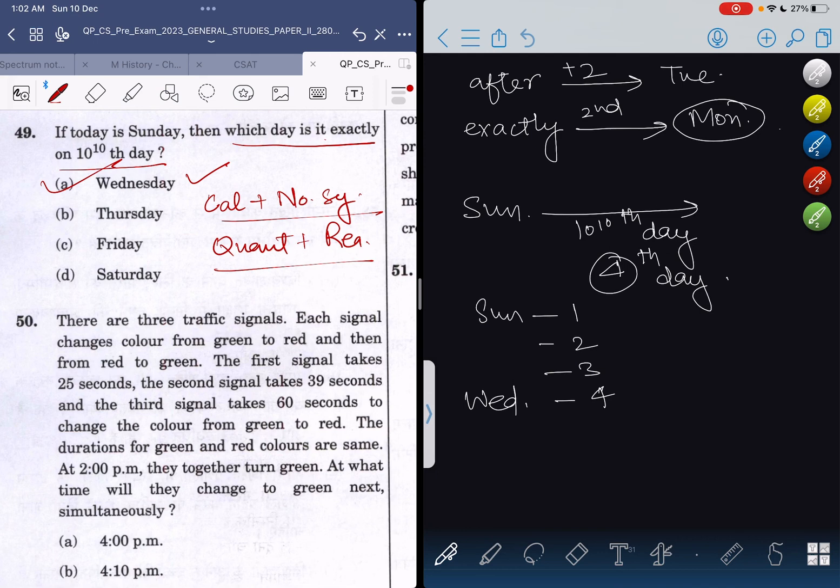It's quant because we have to calculate the number of odd days, which is a lengthy process. After that, the question becomes reasoning because it asks 'exactly ON' and not 'after' 10^10th day. I hope you understand this. Thank you very much.